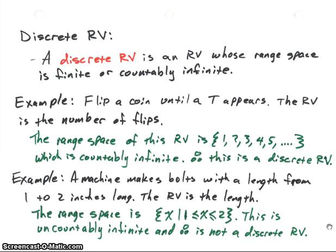Now let's define what a discrete random variable is. A discrete random variable is a random variable whose range space is either finite or countably infinite — basically, you can count the items in the range space. The example we just looked at was a discrete random variable.